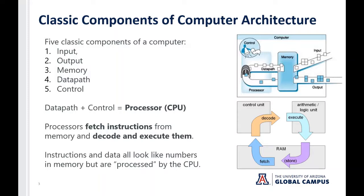What's interesting is instructions and data all look the same — they all look like ones and zeros in memory. But it's the CPU's job to process them accordingly and know the difference between an instruction and data. When engineers design a CPU, they design it to make that distinction and know what to execute and what to execute on. The second diagram shows the fetch, decode, execute, and store cycle, which we'll be talking about throughout the course.